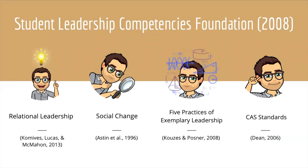The student leadership competencies were created by the Student Leadership Competencies Foundation in 2008, drawing from several main sources: relational leadership by Komives, Lucas, and McMahon in 2013; the social change model by Astin in 1996; the five practices of exemplary leadership by Kouzes and Posner in 2008; and the CAS standards by Dean in 2006. The relational leadership area was added later, clearly because of its 2013 date, after the original Competencies Foundation was created in 2008.